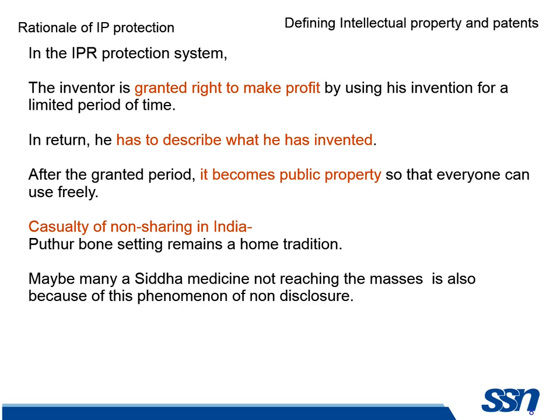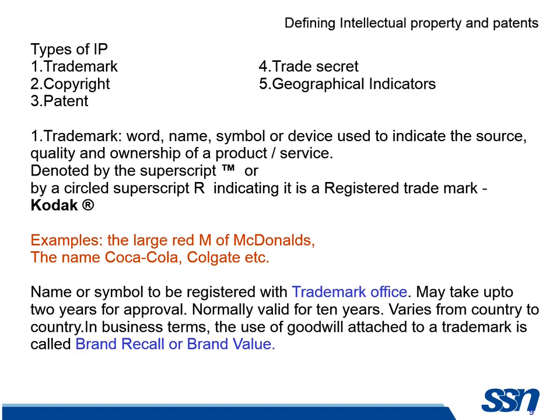For example, many Siddha medicines are not reaching the masses because this phenomenon is kept secret and not disclosed properly. There are different kinds of intellectual properties: a trademark, a copyright, a patent, a trade secret and a geographical indicator. Let's briefly look at those.